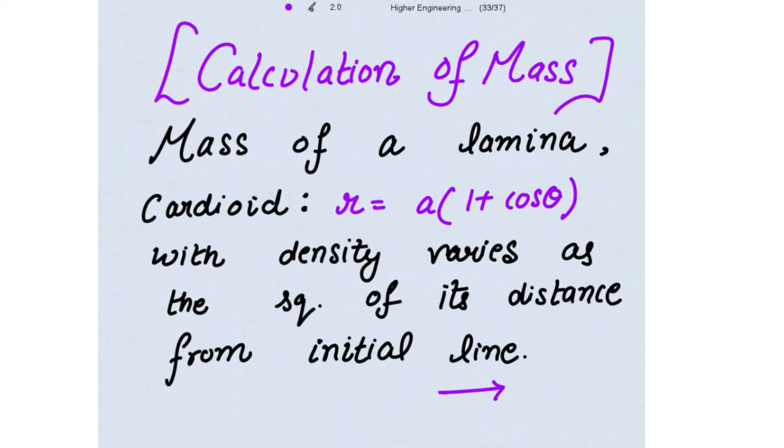Good morning. We need to find the mass of a lamina in the form of the cardioid R equal to A into 1 plus cos theta, with density that varies as the square of its distance from the initial line.